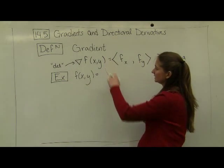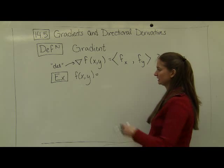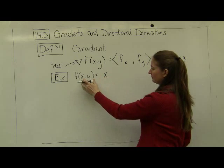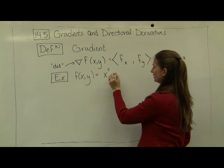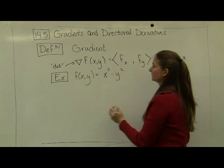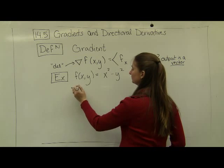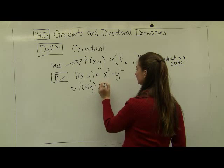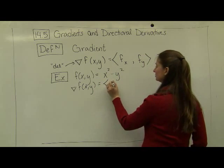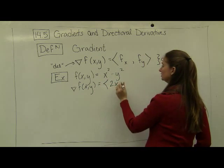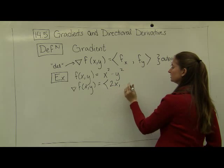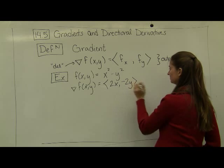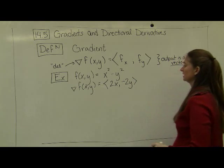So let's look at an example of calculating a gradient. If I have a two variable function given by f of xy is equal to x squared minus y squared, then I can compute the gradient. My gradient of f of xy is just going to be the partial derivative with respect to x, which in this case is really easy, 2x in the x component of the vector, and then the partial derivative with respect to y in the y component of the vector, which in this case is negative 2y.